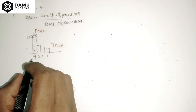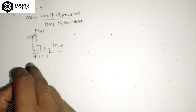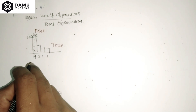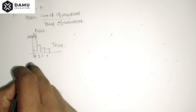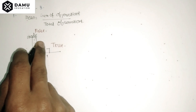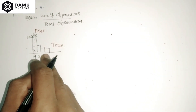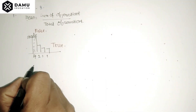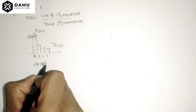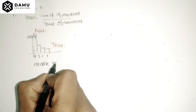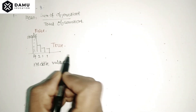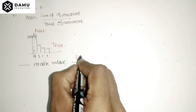The third statement is: the value of every observation in the data set is taken into account when the median is calculated. While calculating the median, we do not take all the values into account — we only take the middle value. We do not consider the first and last values, so that is also false.